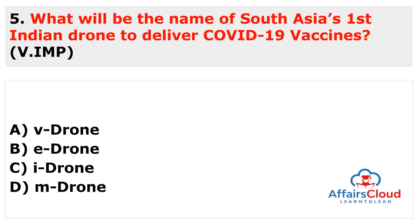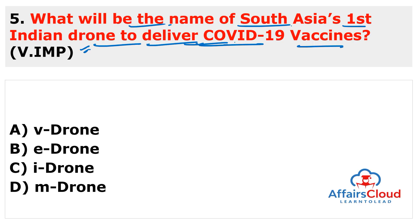Next question: What will be the name of South Asia's first Indian-made drone to deliver COVID-19 vaccines? The answer is iDrone. This Make in India drone will be used to deliver COVID-19 vaccines — and it is the first time in South Asia that an Indian-made drone has been used to transport COVID-19 vaccines.